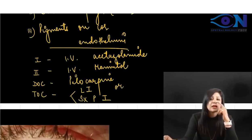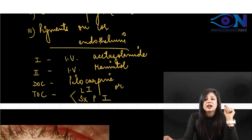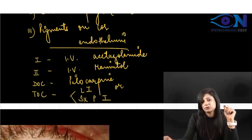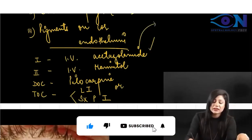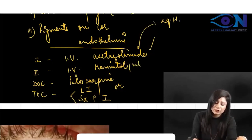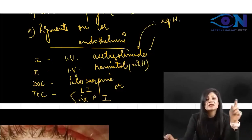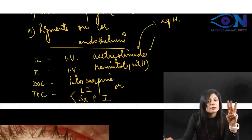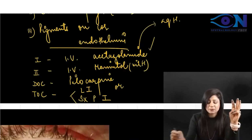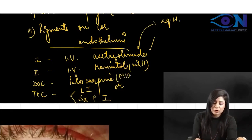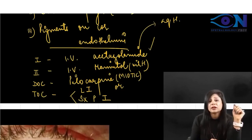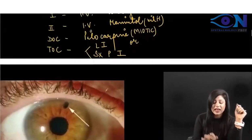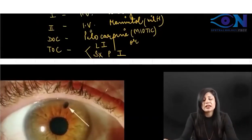Acetazolamide is the first drug because it acts on the aqueous humor, while mannitol acts on the vitreous humor, making it the second drug. Since there is mid-dilatation of the pupil, pilocarpine — being a miotic drug — is the drug of choice. The main problem occurs due to pupillary block, so we create an accessory pupil with the help of laser iridotomy or surgical PI.